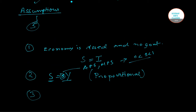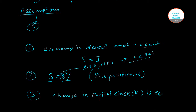Assumption number three: the change in capital stock is equal to gross investment less depreciation delta K. So the change in capital stock, given by K-dot, equals investment I minus depreciation delta K.